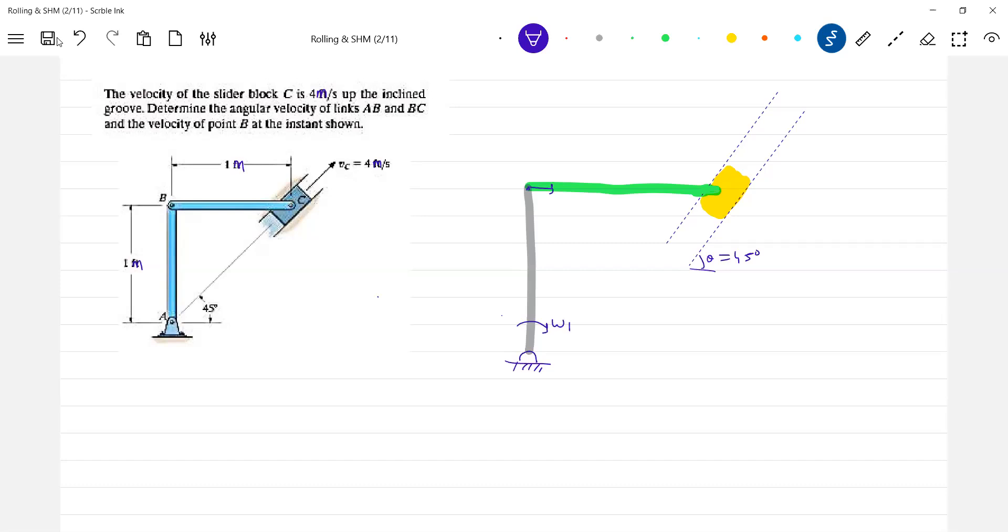Omega 1, well after your point B must be like this, there is a point B. VB should be equal to this L1, this L2. VB should be equal to L1 Omega 1.